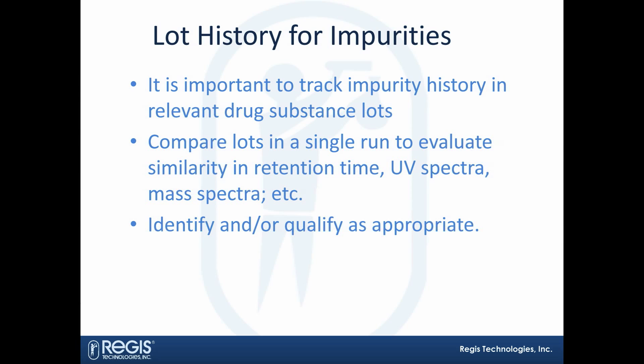I want to mention lot history for impurities. It's important to track impurities for your drug substance across lots. The best way to do that — it should be obvious — is to compare them in a single run. Look for similarities in retention time, UV spectra, mass spectra. You may have to tailor this for the method you're working with; I'm giving an example that pertains to HPLC.